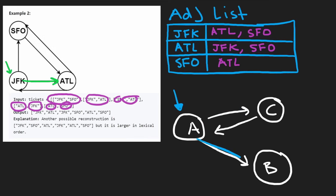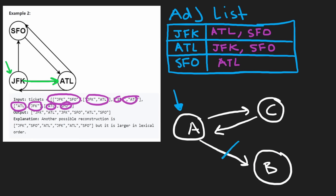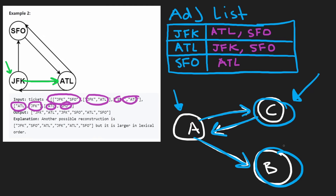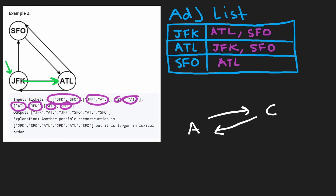But sometimes the first path we try doesn't work. Suppose we have a graph where we start at node A and have two choices: go to C first or go to B first. We choose B because it comes first lexically. But now we're stuck — there are no outgoing edges from B, and we can't get back to A. So we tried to be greedy, took the alphabetical character first, but it didn't work out. We end up backtracking — we say we're not going to travel along that edge just yet. Instead we travel to C first, go back to A, then go to B. So sometimes we'll go along an edge and realize it doesn't work, then reverse our decision and travel along a different edge.